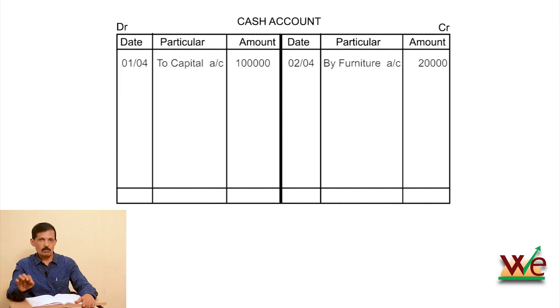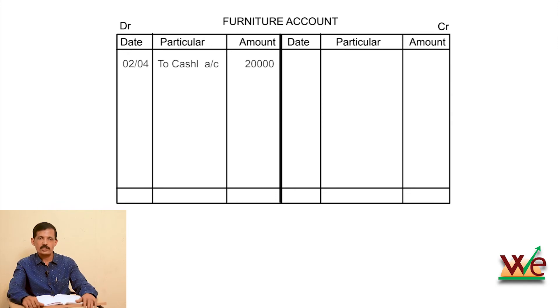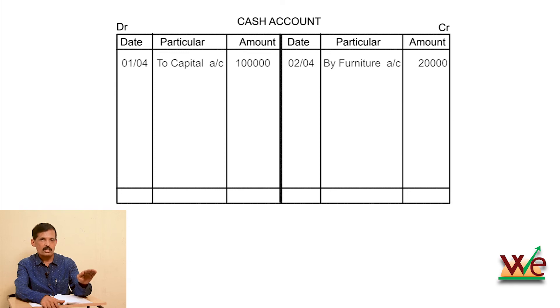Now, if we have cash of one lakh and a business starts — if you have furniture worth 20,000 — I will apply the rule: debit all assets, debit all increases in assets, credit decreases in assets. What is that transaction impact? We have cash of one lakh. If we purchase furniture worth 20,000, we pay the corresponding debit to this credit. Buy Furniture Account — why? This is 20,000 credit, with the corresponding debit to the Furniture Account.